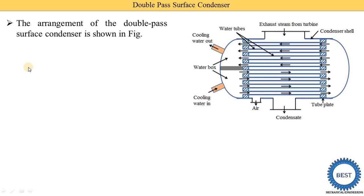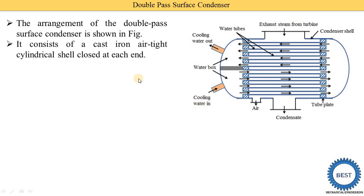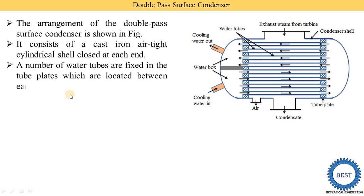The arrangement of the double pass surface condenser is shown in this figure. This heat exchanger consists of cast iron — an airtight cylindrical shell closed at each end by heads installed on both ends. A number of water tubes are fixed in the tube plates which are located between each cover head and the shell. In the front view we see only seven to eight tubes, but from the side view there are many more tubes.